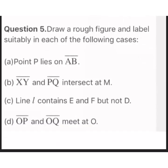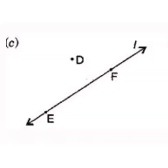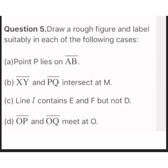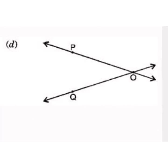Third: line L contains E and F but not D — line L is drawn with points E and F on it, and D is a point outside line L. Fourth: line OP and line OQ meet at point O — lines OQ and OP are drawn with their common meeting point at O.